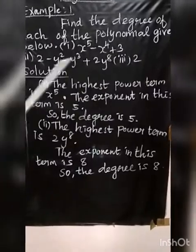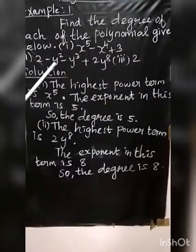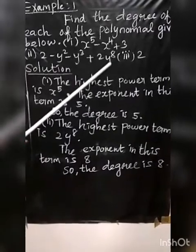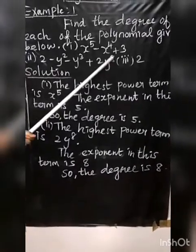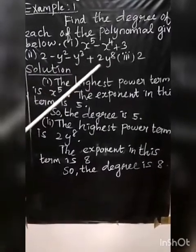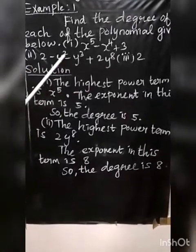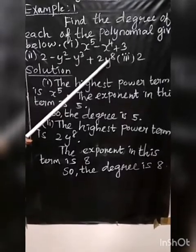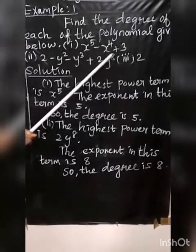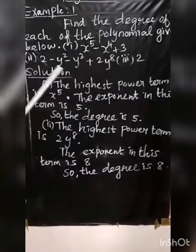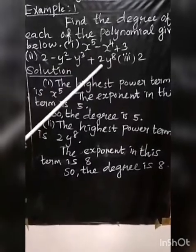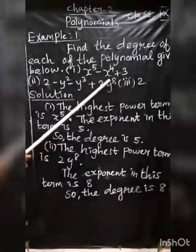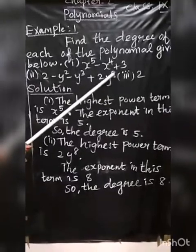Second sum: 2 Minus Y Square Minus Y Cube Plus 2Y Power 8. The terms are Y Square, Y Cube, and 2Y Power 8. The highest power term is 2Y Power 8, so the exponent is 8.